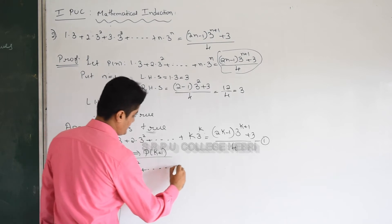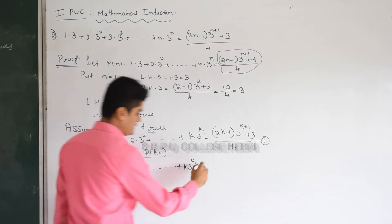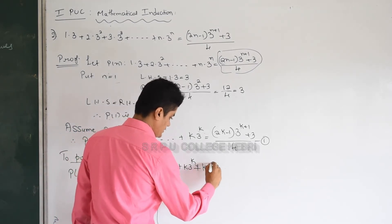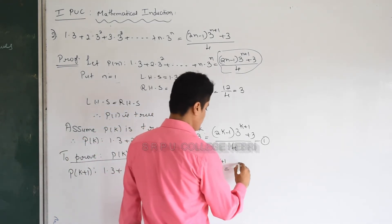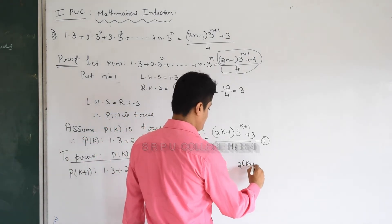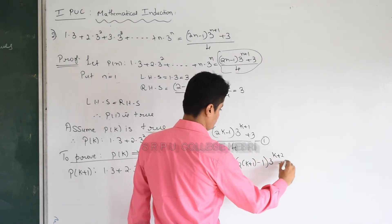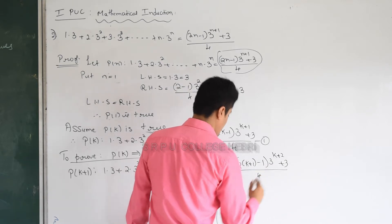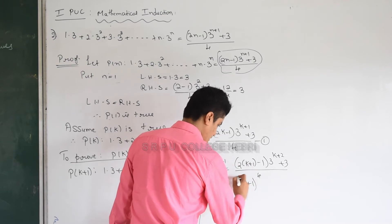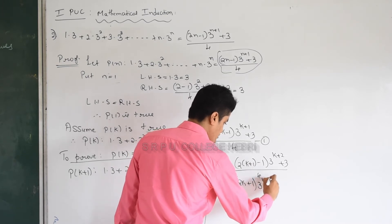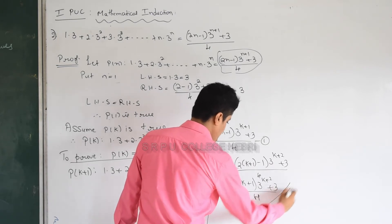Write first two terms and the last term, plus the next term. k is here so k plus 1 is the next term. 3ᵏ becomes 3^(k+1). On the right hand side, wherever k is present replace it by k plus 1, giving (2(k+1) minus 1) which is (2k plus 1) into 3^(k+2) plus 3, divided by 4. This is the answer you should get after simplification.